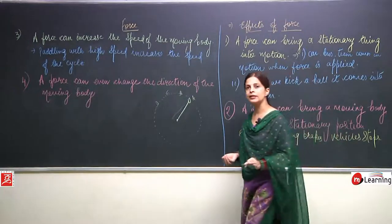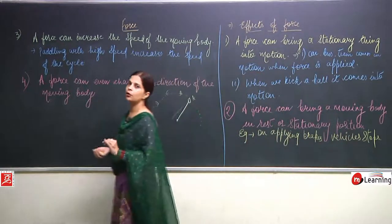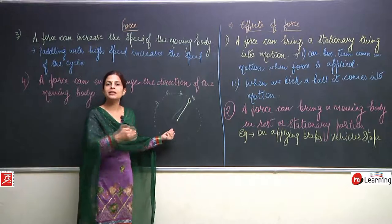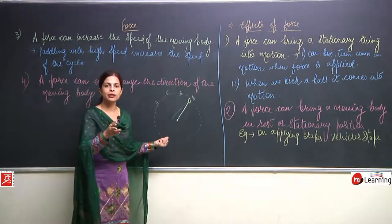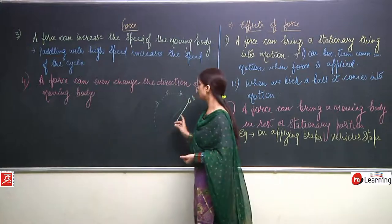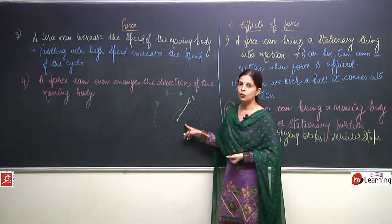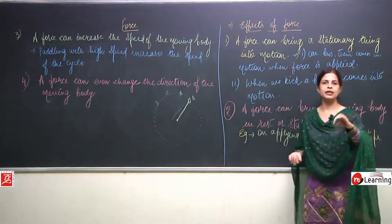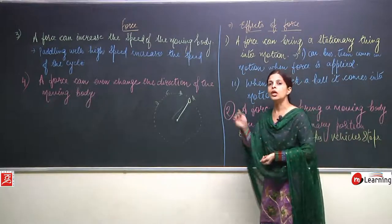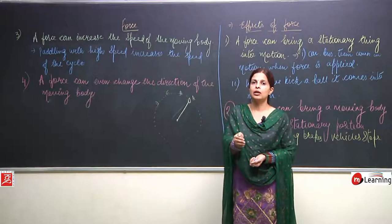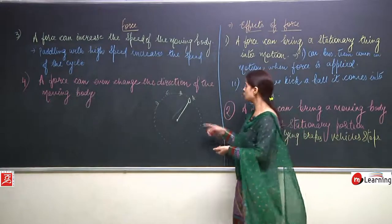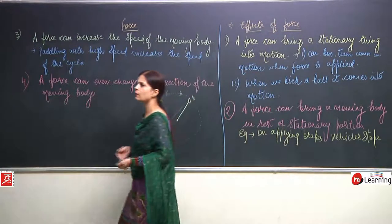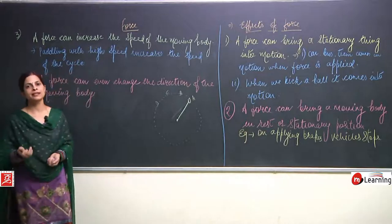A bowler is bowling and the ball is coming toward you. You are supposed to hit the ball in the opposite direction. When you miss the ball, it hits your stumps and you are bowled — you are out. Whenever you play cricket as a batsman, you have to change the direction of the ball which is coming to you. You hit the ball with your bat and it goes for a four or six.